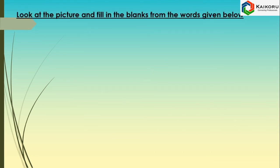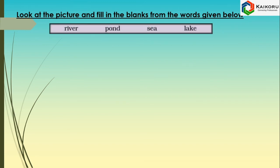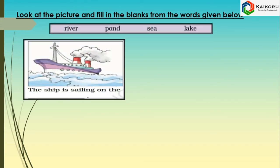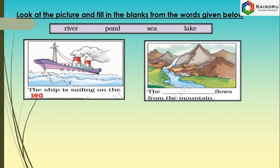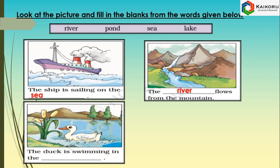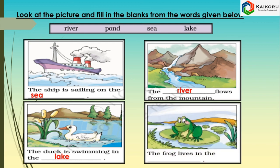Look at the picture and fill in the blanks from the words given below. The ship is sailing on the sea. The river flows from the mountain. The duck is swimming in the lake. The frog lives in the pond.